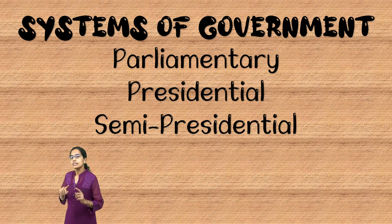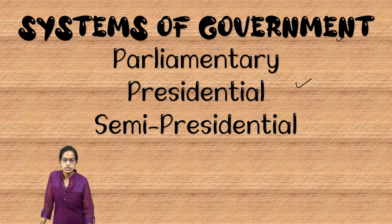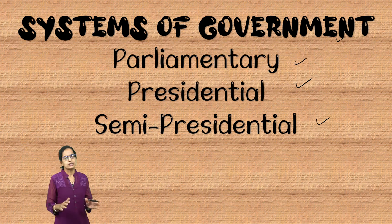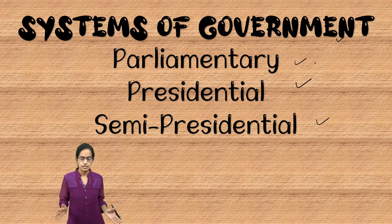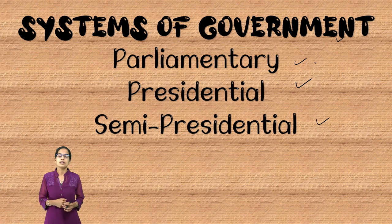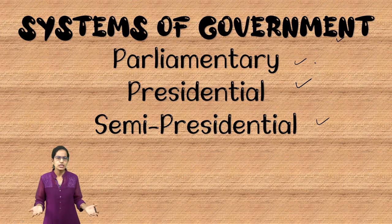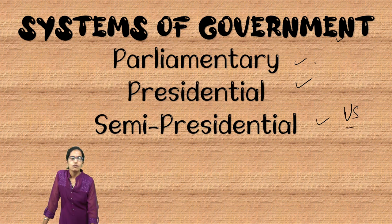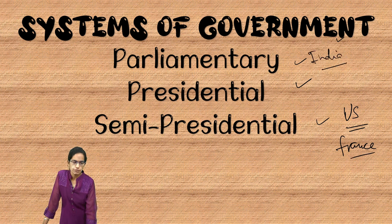The system of government can be of three types: parliamentary, presidential, or semi-presidential. There can be a president in some countries, a chancellor in others, or a prime minister. For example, the United States has a presidential form, France has a semi-presidential form, and India has a parliamentary form of government.